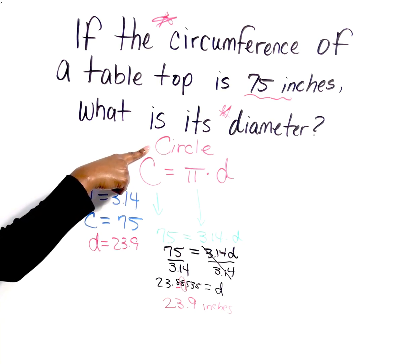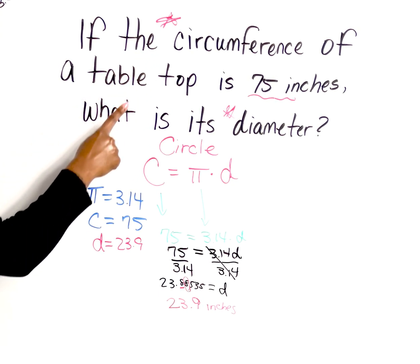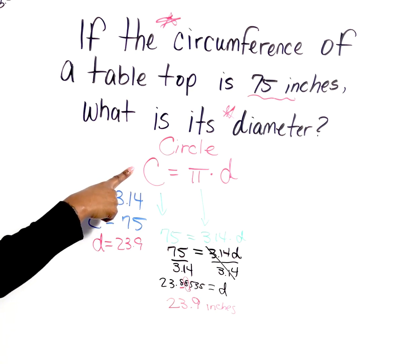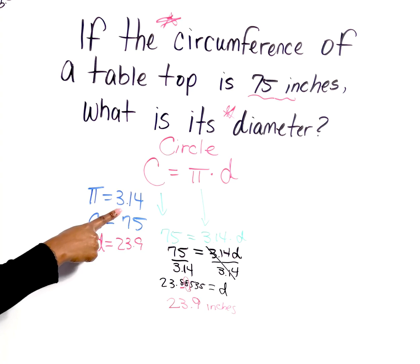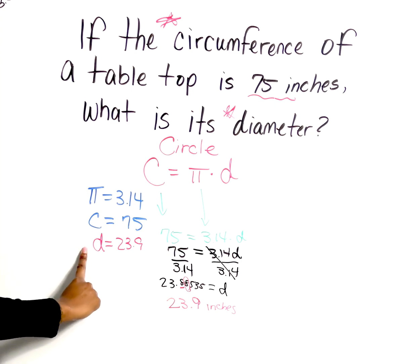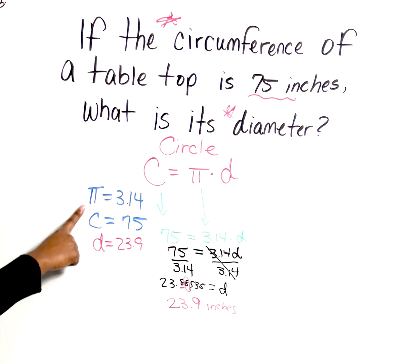So now that we have identified our shape, we need to figure out which formula to apply. If they give us the circumference, that lets me know I'm going to be using the formula for circumference, which is π times d. Remember, π is a given—3.14—and they will not give you that value. They also gave us the circumference, and we are solving for the diameter.